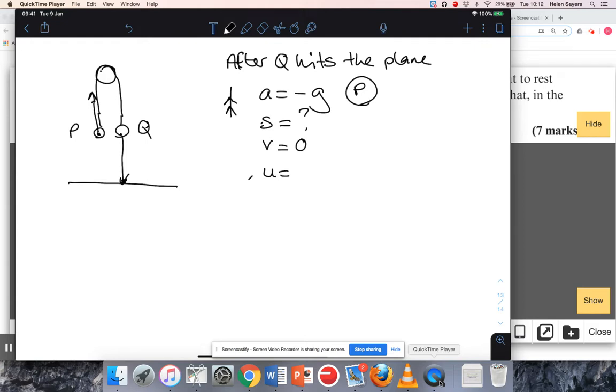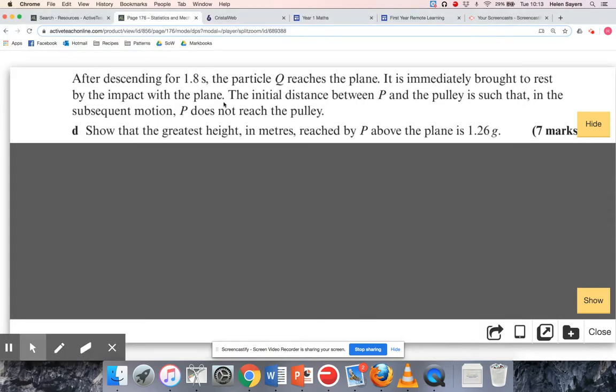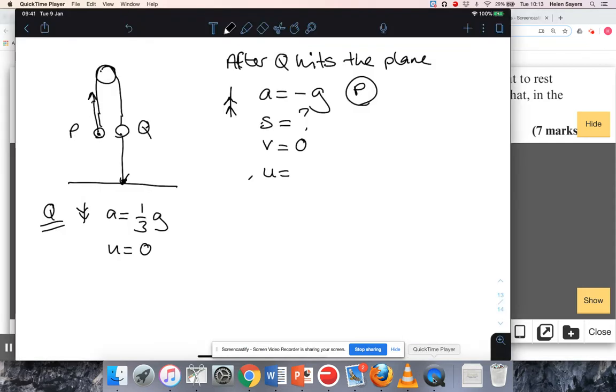Let's go back to when they were still attached. I'm going to look at Q and take down as positive. We were told in the question that whilst they were still attached, Q was moving down with an acceleration of a third g. They were released from rest originally, so u was zero. I'm told in this new part of the question that it takes 1.8 seconds, so t is 1.8. I'm trying to find v because the final velocity of this part of the journey becomes the initial velocity for the bit that I'm trying to look at.